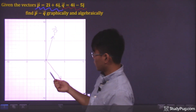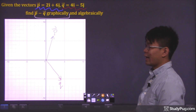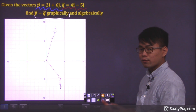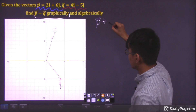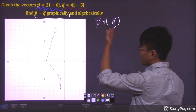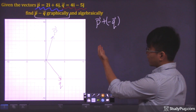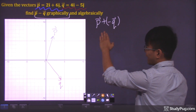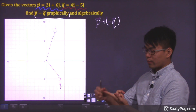Now that we have the vectors, we want to find vector p minus vector q graphically. Whenever we subtract vectors graphically, we first need to change the expression so that we are adding the vectors — specifically, we are adding the negative of vector q. So we have vector p plus the negative of vector q. Now we can use either the tip-to-tail method or the parallelogram method.